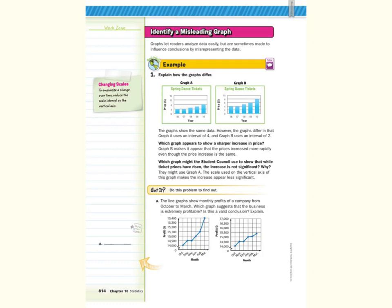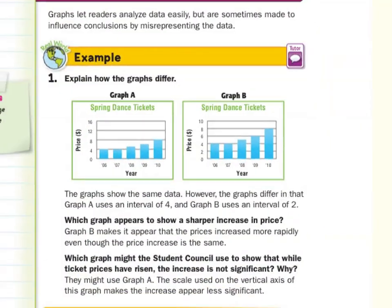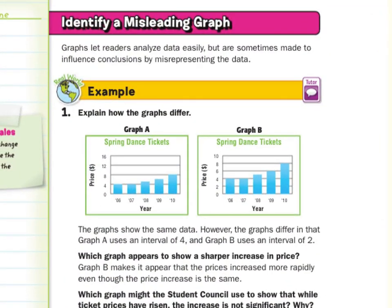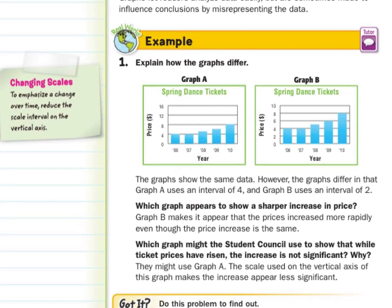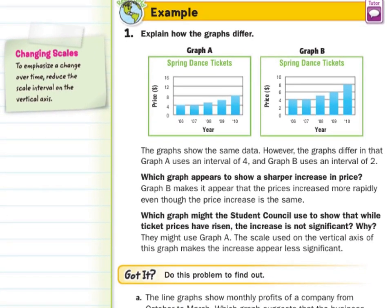Identify a misleading graph. Graphs let readers analyze data easily, but are sometimes made to influence conclusions by misrepresenting the data. In our first real world example here, explain how the graphs differ. We have graph A of spring dance tickets with the price and graph B with spring dance tickets and the price. Our price scale here goes from 0 to 16. Our price scale here goes from 0 to 10.